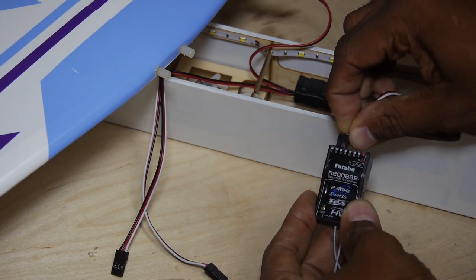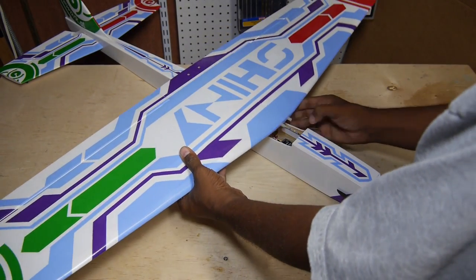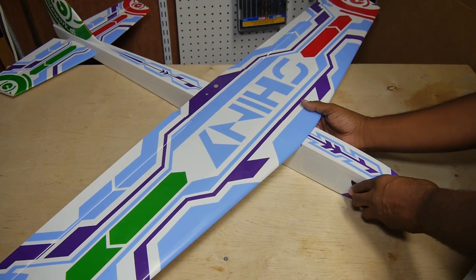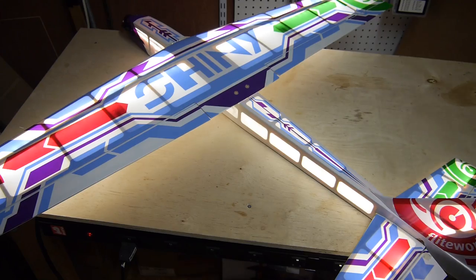All that's left to do is wire up the lights and servos. One last light check for sanity, and then it's on to setting up the control surfaces.